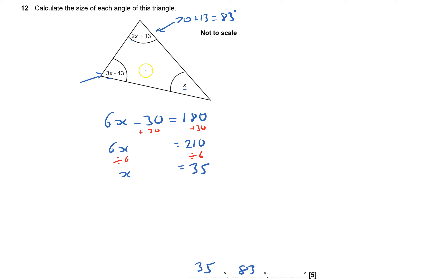And this one here, I've got three X's. So three times 35 is 105. Again you've got a calculator if necessary. Take away 43 and that is 62 degrees. So that is the third one.